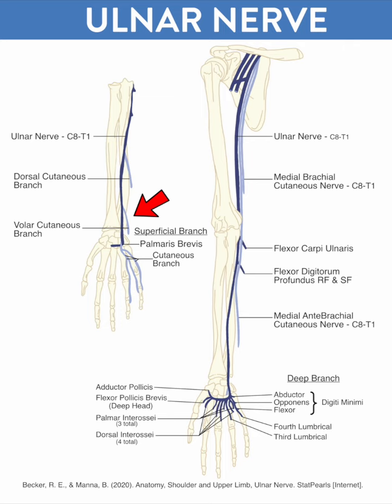Below the level of the palmar and dorsal cutaneous branches, it travels superficial to the transverse carpal ligament at the wrist and through Guyon's canal at the hook of the hamate and the pisiform. After the wrist,